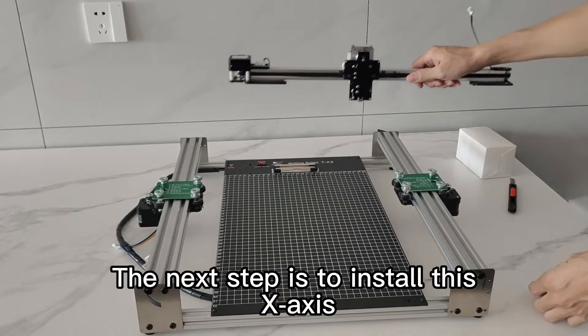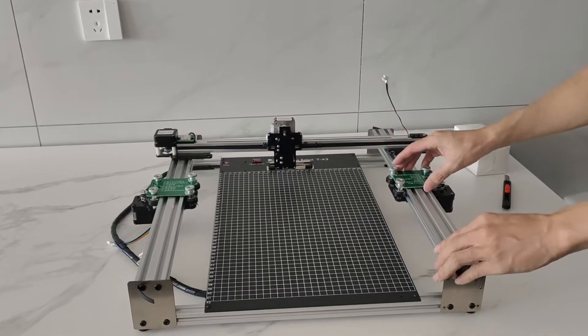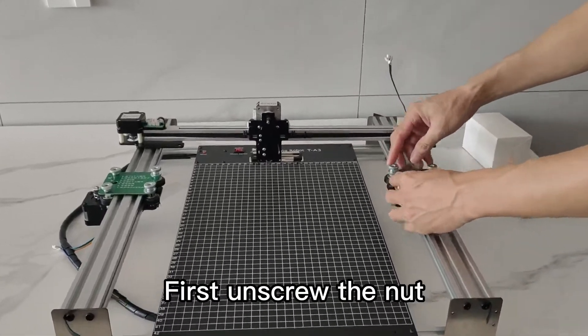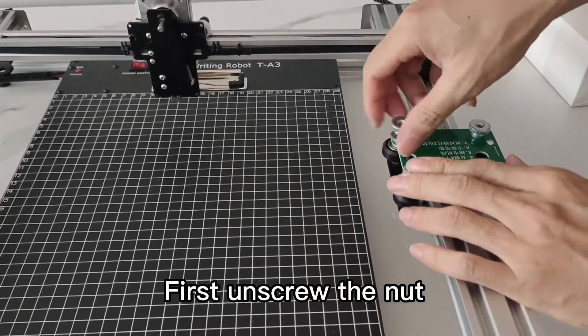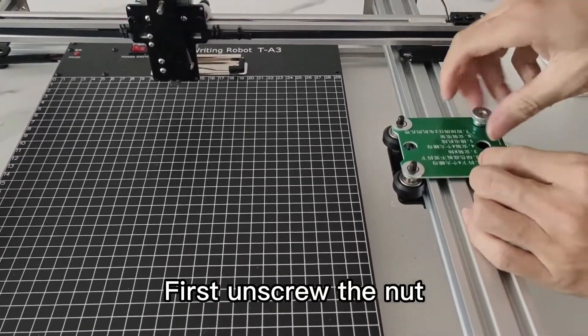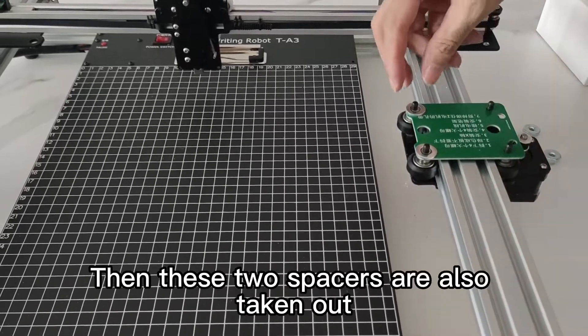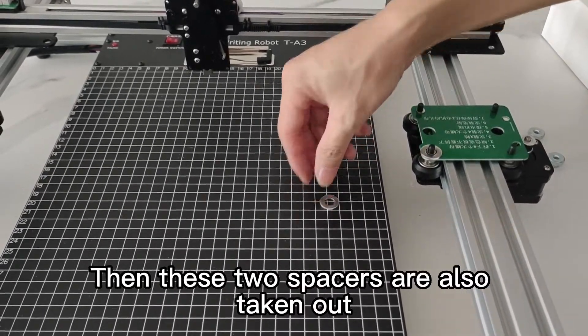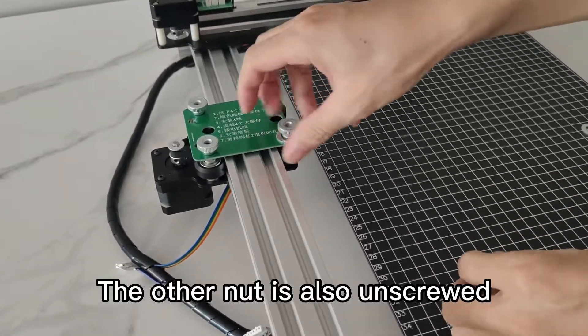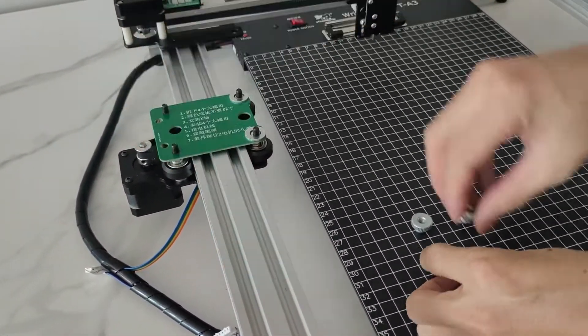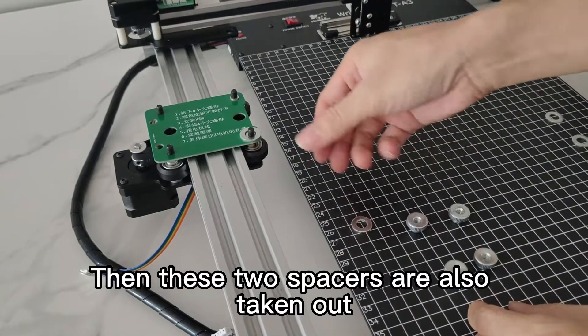The next step is to install this x-axis. First unscrew the nut. Then these two spacers are also taken out. The other nut is also unscrewed. Then these two spacers are also taken out.